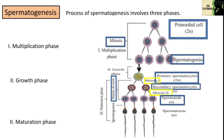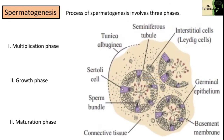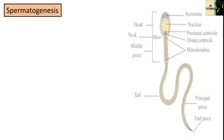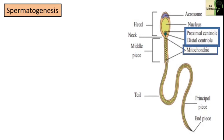The spermatid is non-motile and non-functional. It gets transformed into a functional spermatozoa, that is sperm, by the process called spermiogenesis. During this process, the spermatids remain held to each other and to the Sertoli cells by cytoplasmic bridges. The sperm heads remain attached to the Sertoli cells with their tails hanging in the lumen of the seminiferous tubule. These Sertoli cells provide nourishment to developing sperms during spermiogenesis. The length of the spermatid increases, centrioles are rearranged, mitochondria become spirally coiled, and the acrosome is formed from the Golgi complex.